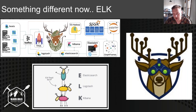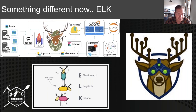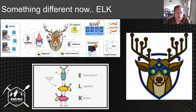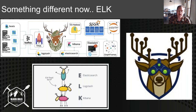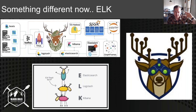Anytime you hear someone talking about throwing their logs into ELK, they're actually throwing it into three separate things: Elasticsearch, Logstash, and Kibana. Each one of these components can be brought together to provide a really wonderful logging solution with scalability, extensibility, visualizations, and really cool search and alert capability. You can have Winlogbeat — from Elasticsearch — pull event logs and dump them into Logstash, which then pulls them into Elasticsearch, with visualizations through Kibana and alerting with ElastAlert. We'll also talk a bit about Sigma.